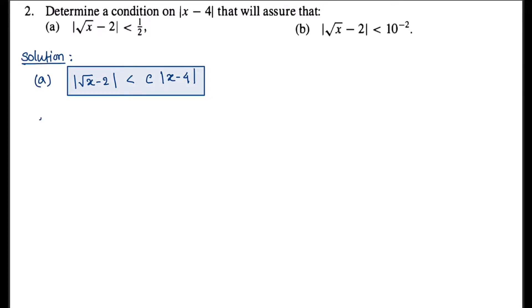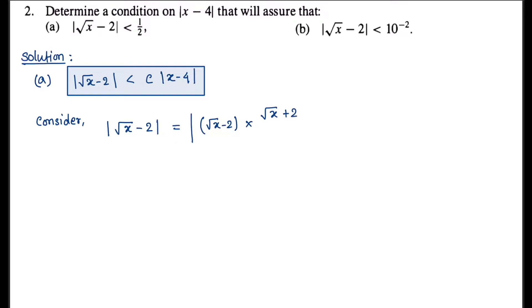Consider |√x - 2|. This can be written as (√x - 2) rationalized by multiplying and dividing by (√x + 2), giving us (x - 4) divided by (√x + 2).